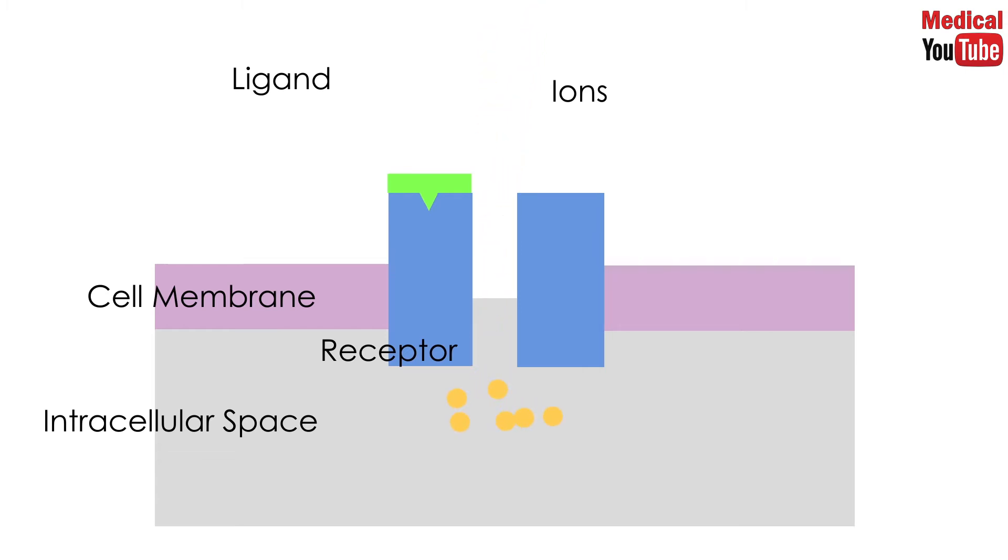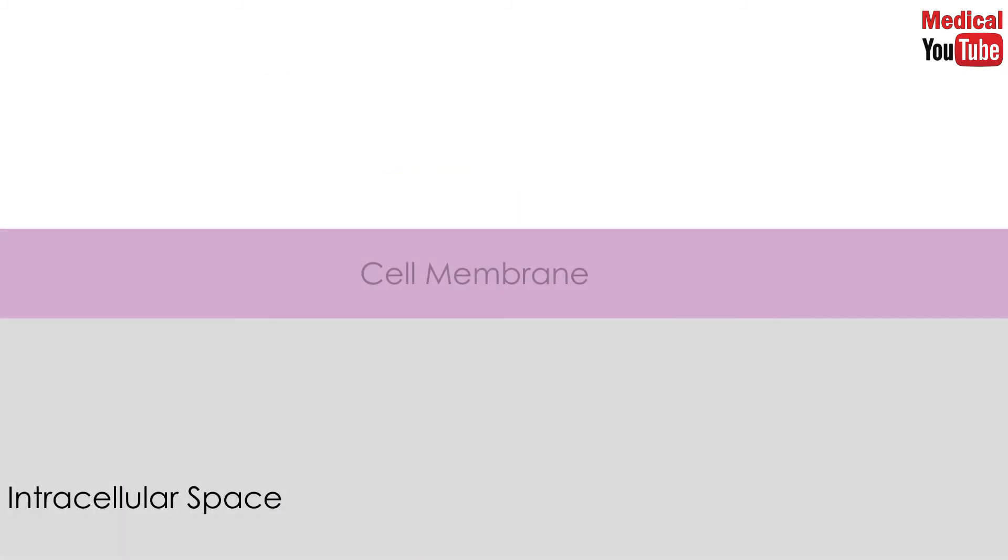G-protein coupled receptors are membrane receptors linked to G-protein, and G-protein is composed of three subunits: alpha, beta, and gamma, plus a GDP molecule bound to the alpha subunit. They comprise the largest known class of membrane receptors. Humans have more than 1,000 known types of them.